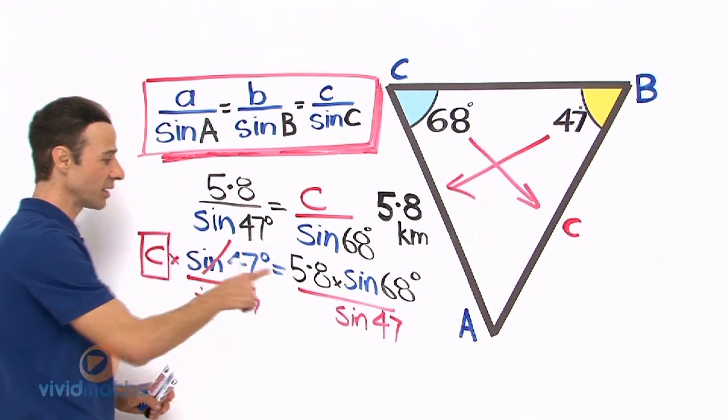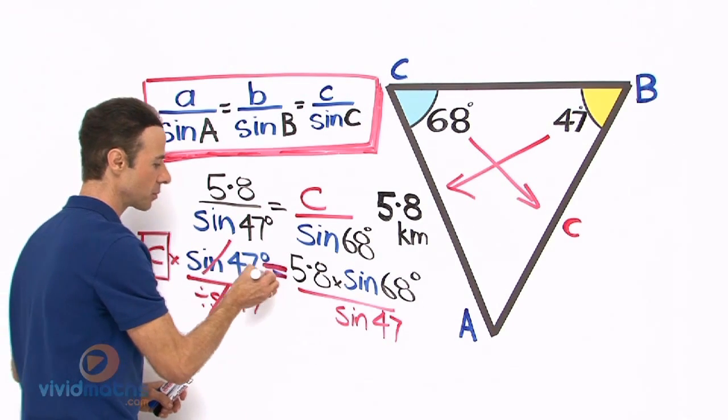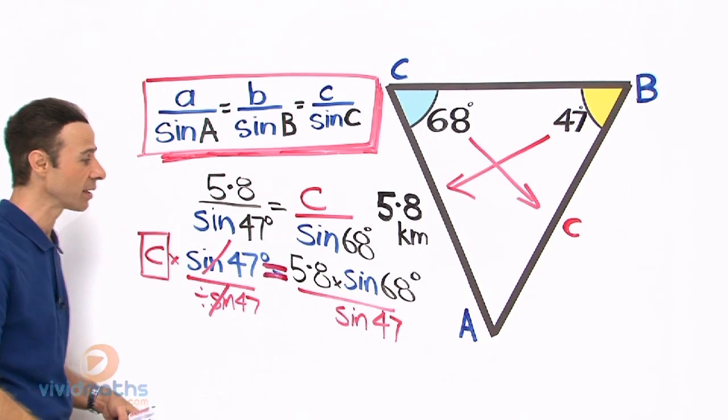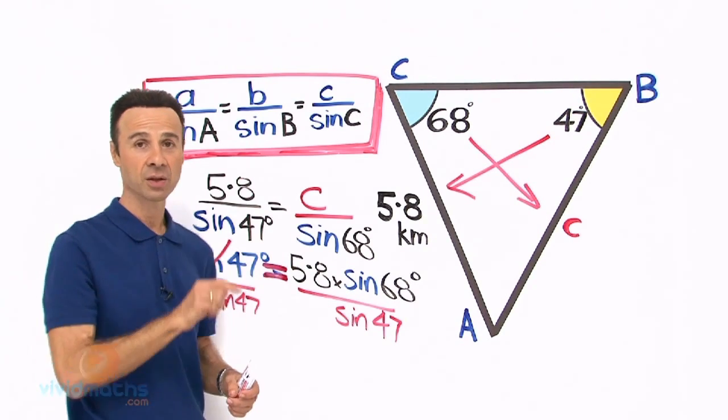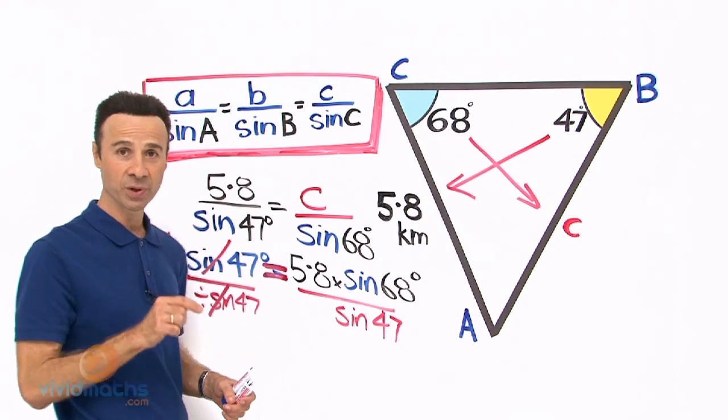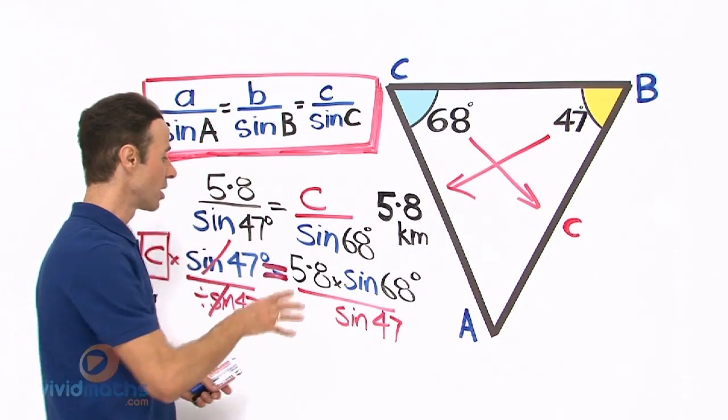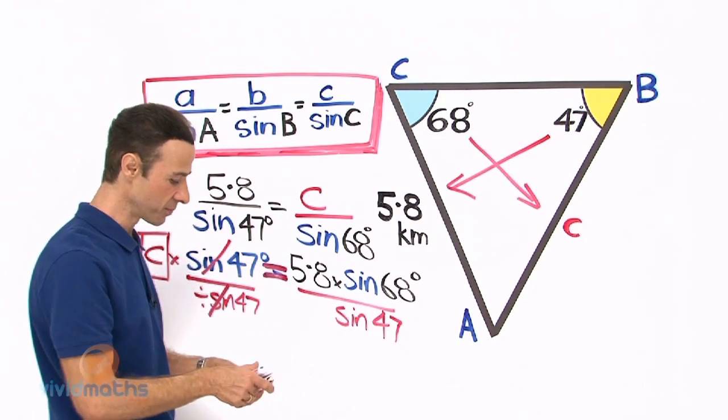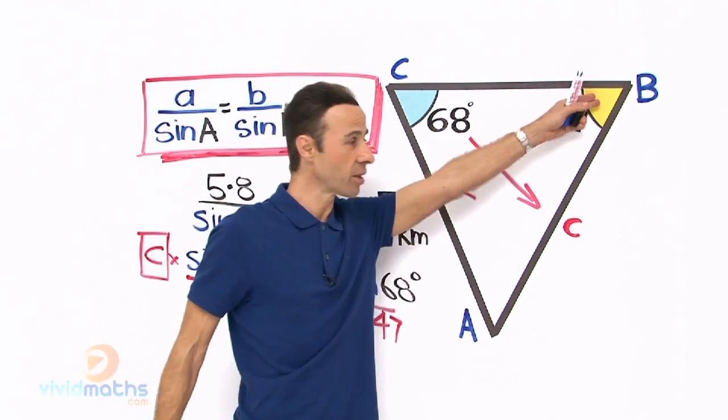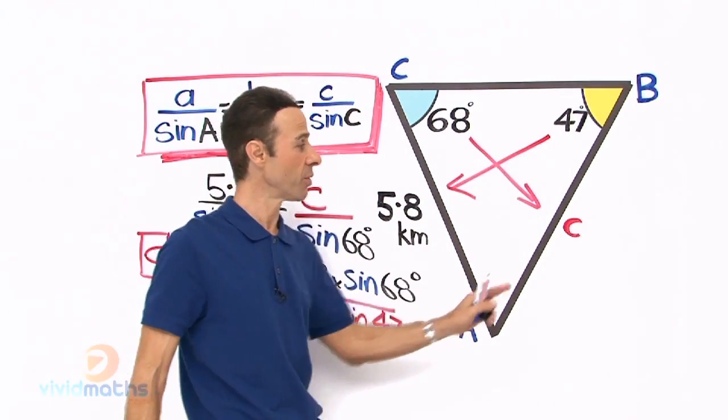Let us put that into the calculator directly: 5.8 times sine 68 divided by sine 47, then press equals. The answer will be in kilometers, it is the length right across there. There is our little c that equals...